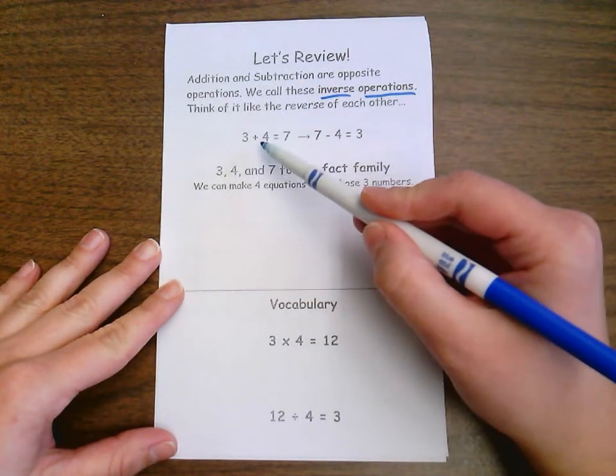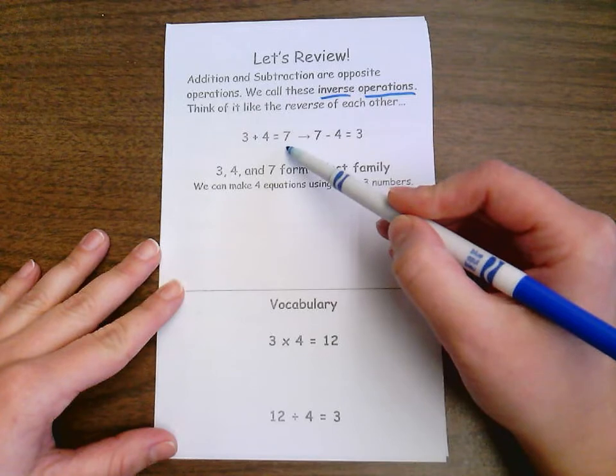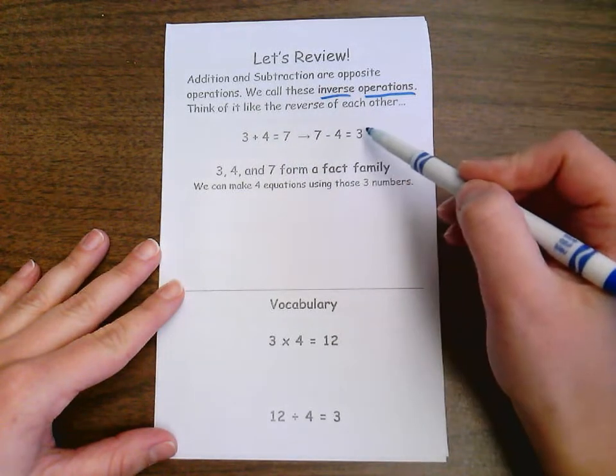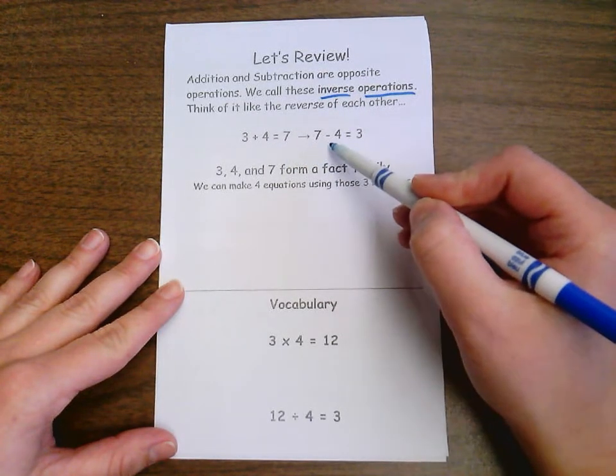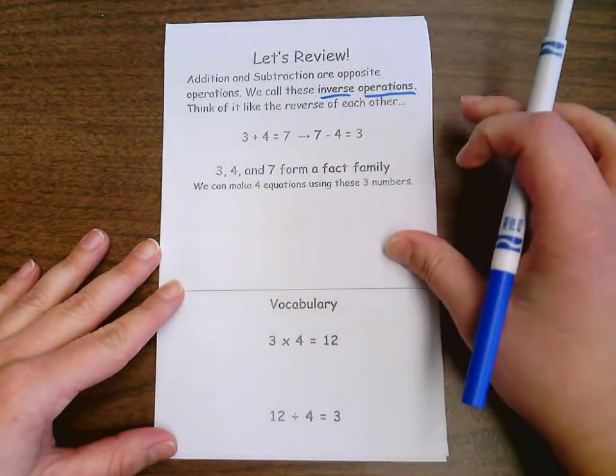So here's an example. Three plus four we know equals seven, and we can do the opposite using subtraction, where we have our total of seven, we take away four, and that equals three.